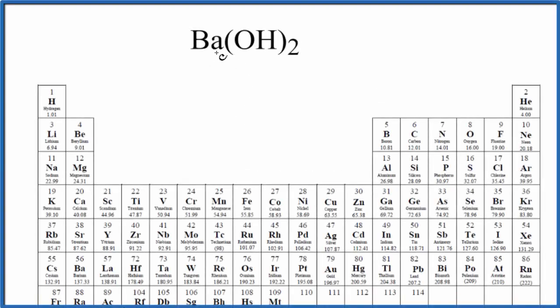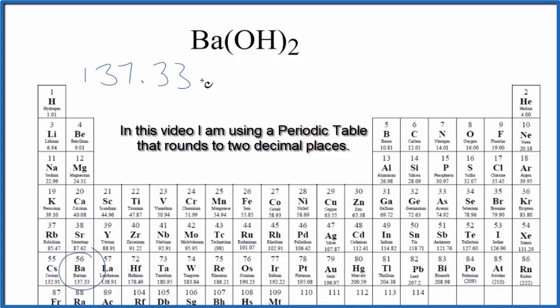In this video we'll find the molar mass for Ba(OH)2, barium hydroxide. On the periodic table, barium is 137.33 and the units are grams per mole. I won't write those each time. We only have one barium atom.